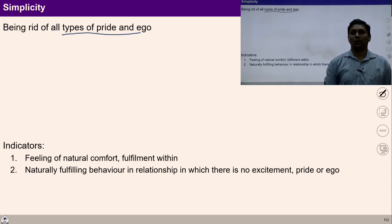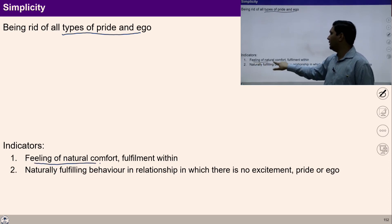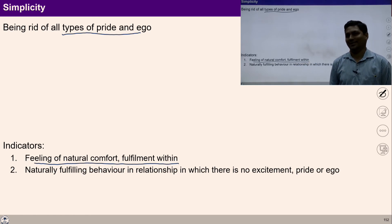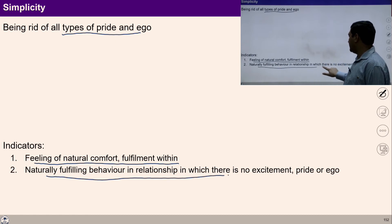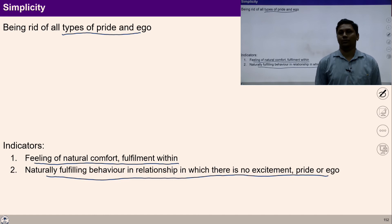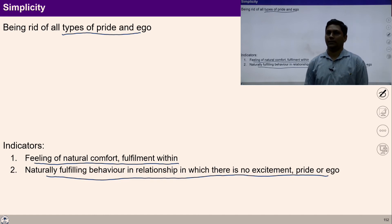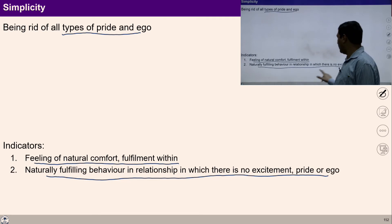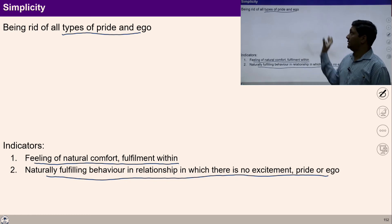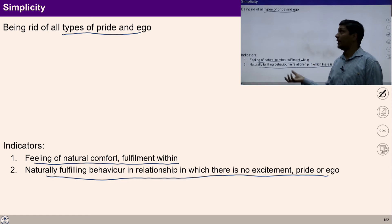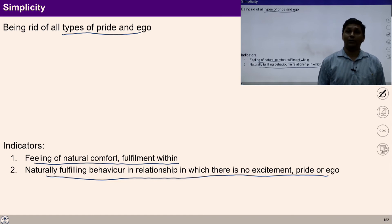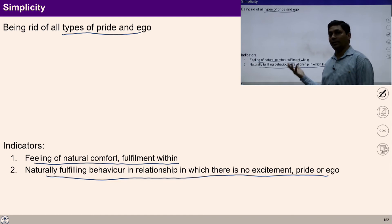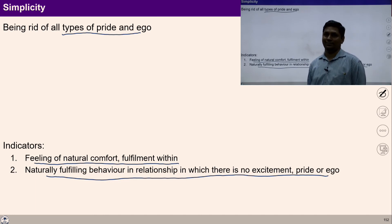What are the indicators of simplicity? Number one: feeling of natural comfort and fulfillment within me. I feel comfortable naturally in myself. And naturally fulfilling behavior in relationship with no excitement, no pride, no ego — because I know this is my participation, this is my duty and obligation. Now I am participating with human beings and the rest of nature, free from ego and excitement. This is simplicity. For a harmonious society, simplicity in everyone is required, as is affection and non-accumulation in everyone.